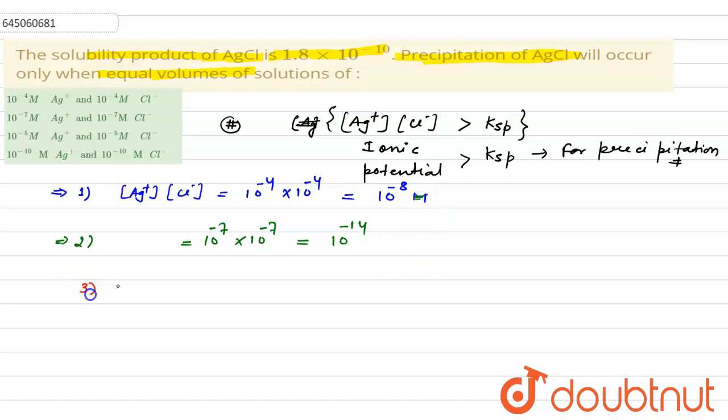For the third, ionic potential will be equal to 10^-5 multiplied by 10^-5. Now, if you will see, out of the four options, only first option have ionic potential greater than Ksp.